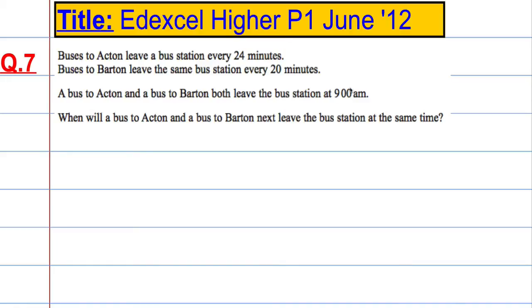So question 7 is about buses. It says that buses to Acton leave the bus station every 24 minutes, and buses to Barton leave the same bus station every 20 minutes. A bus to Acton and a bus to Barton both leave the bus station at 9am. When will the bus to Acton and the bus to Barton next leave the bus station at the same time?